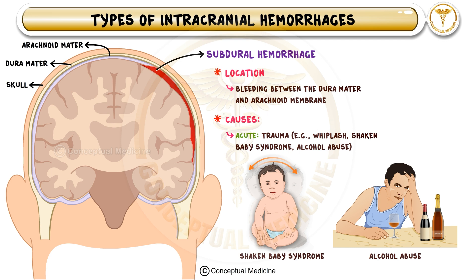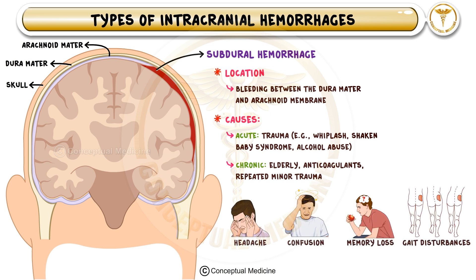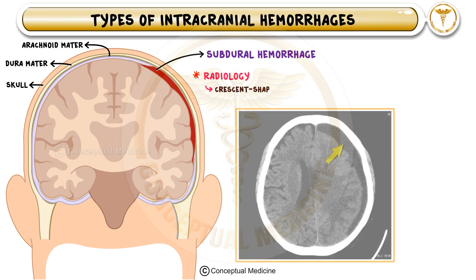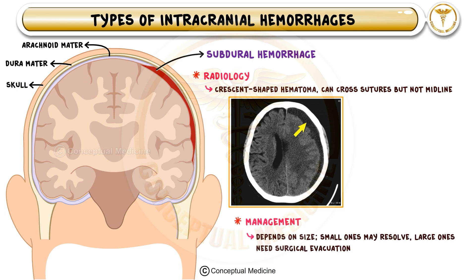Clinically, subdural hemorrhages can be acute or chronic. Acute subdural hemorrhage occurs after significant head trauma and leads to rapid neurological deterioration, whereas chronic subdural hemorrhage may develop over weeks to months, particularly in elderly patients with minor head trauma. Symptoms include headache, confusion, memory loss, and gait disturbances. On CT scan, subdural hematomas appear as crescent-shaped hyperdensities that can cross suture lines but do not cross the midline due to the presence of the falx cerebri. If the hematoma is small and asymptomatic, it may resolve on its own; however, if large and causing a midline shift, surgical evacuation via burr hole drainage or craniotomy is required.